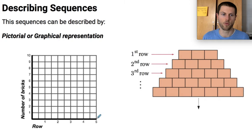Finally, I can express this pictorially. What I can do is I can graph the row by the number of bricks in that row. So the first row has 3, so I could plot (1,3), I could plot (2,4), I could plot (3,5), I could plot (4,6), (5,7).